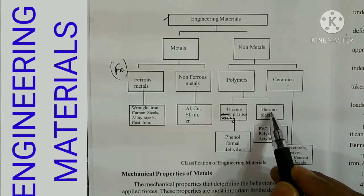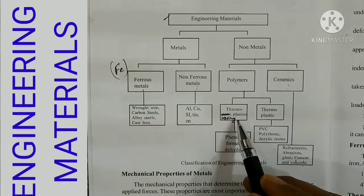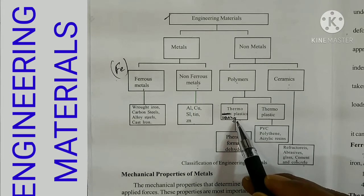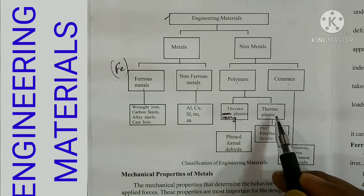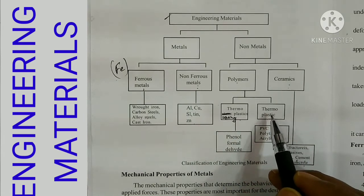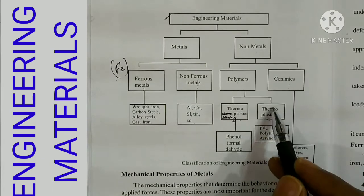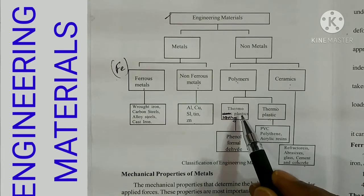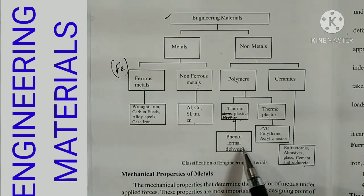Plastics include thermosetting plastics and thermoplastics. Thermoplastics can be recycled — for example, a polythene bag can be melted and remade. Thermosetting plastics cannot be recycled. An example of thermosetting plastic is phenyl formaldehyde.